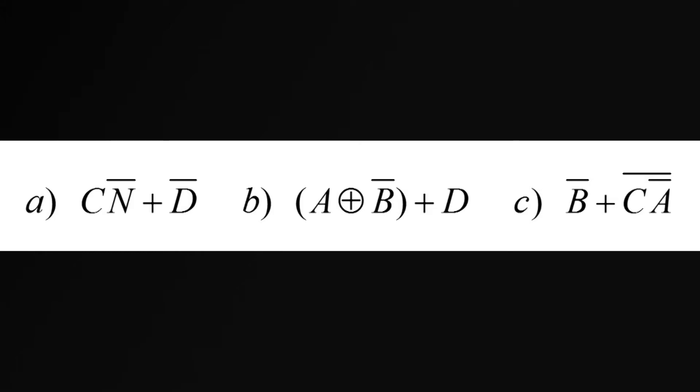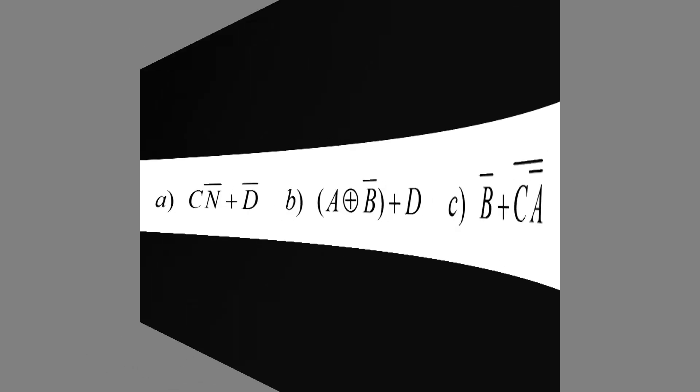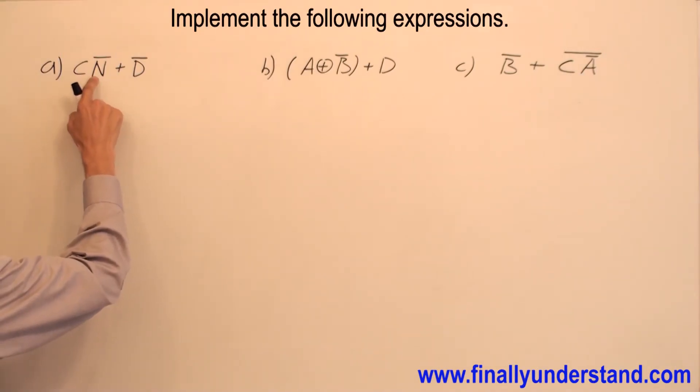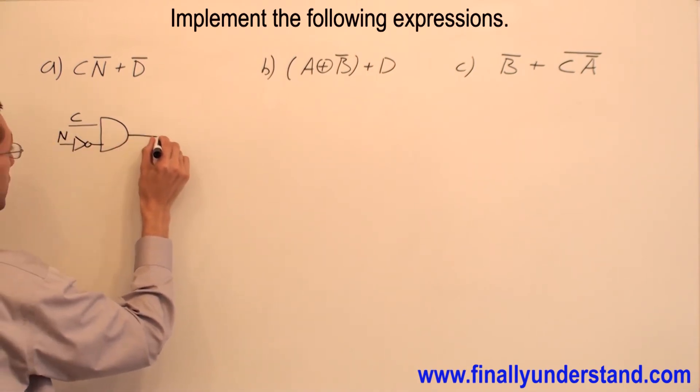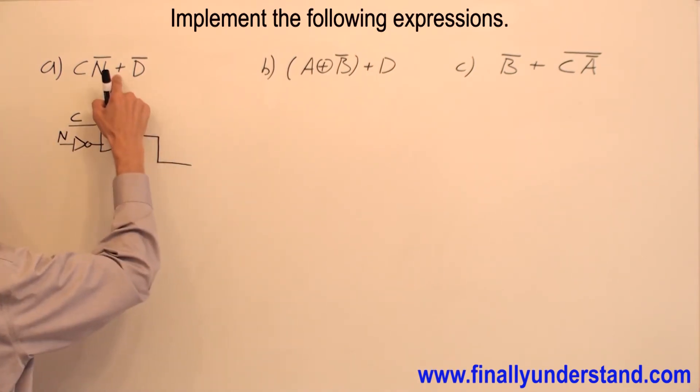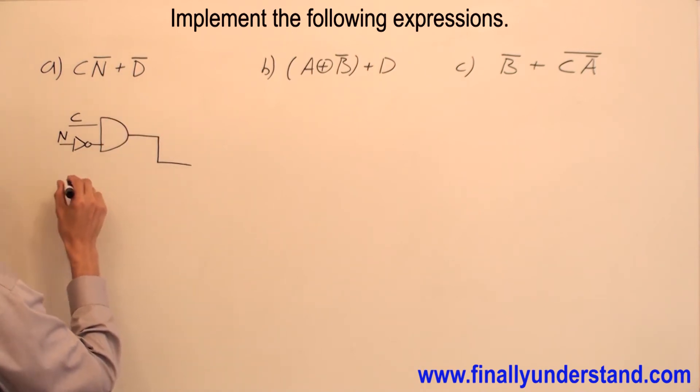Let's implement these functions. This is an AND gate and N goes with the inverter. So I'm going to draw an AND gate. This is my input C and N is ANDed with C, but N is connected to the inverter. Now the output of the AND gate is ORed with D̄. D will go with the inverter.